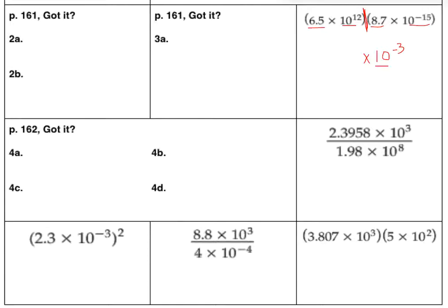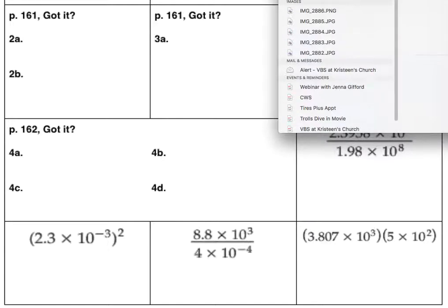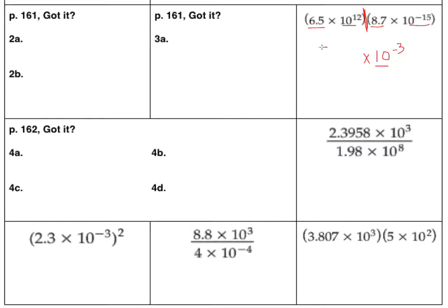If I bring up my calculator and type in 6.5 times 8.7, I get 56.55.